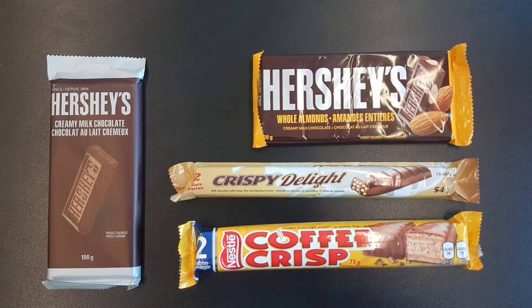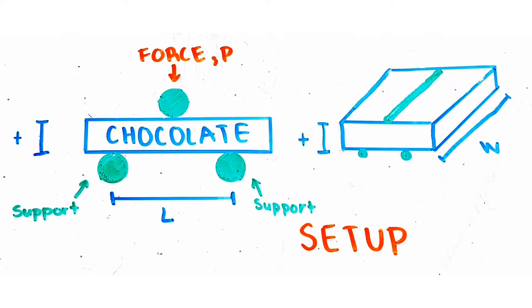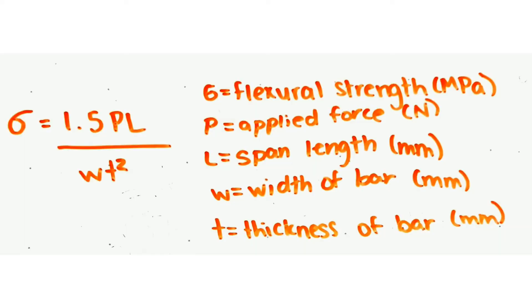We'll be using a three-point bending test to test the strength of these chocolate bars. We have two supports on the edge of each chocolate bar, and we have a force being applied on the center of the bar. We're going to calculate flexural strength — the highest strength the material experiences during its moment of failure — using this equation.